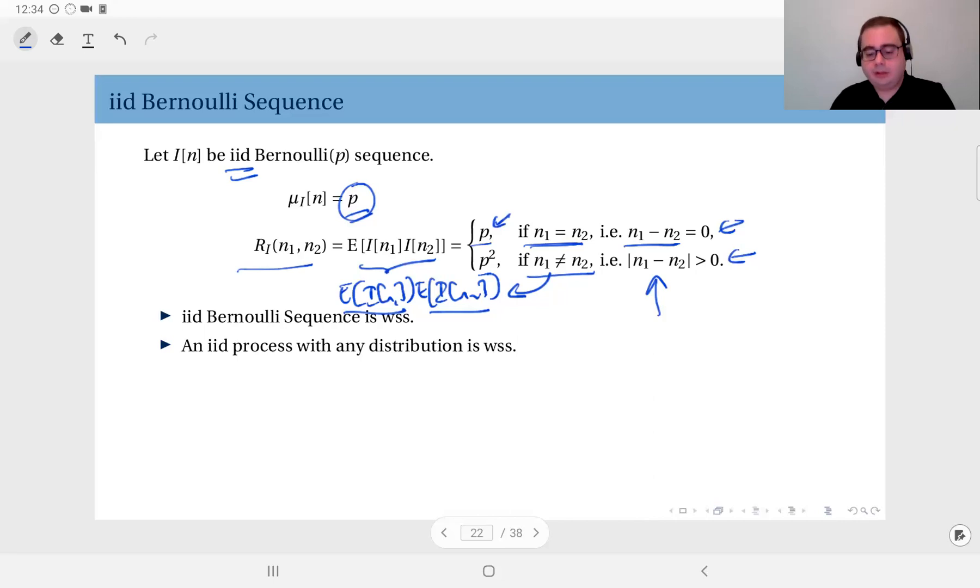In fact, any IID process, it doesn't have to be Bernoulli. If you have a random process that is IID, which means if you observe it at any two different time instance, the distribution you see at those two time instance will be the same, the exact same distribution. Not only that, but those observations are independent random variables. If you have such a random process, it will always be wide sense stationary.